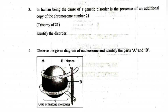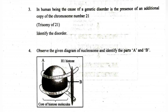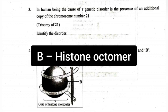4. Observe the given diagram of a nucleosome and identify parts A and B. Answer: A — DNA. B — Histone octamer.